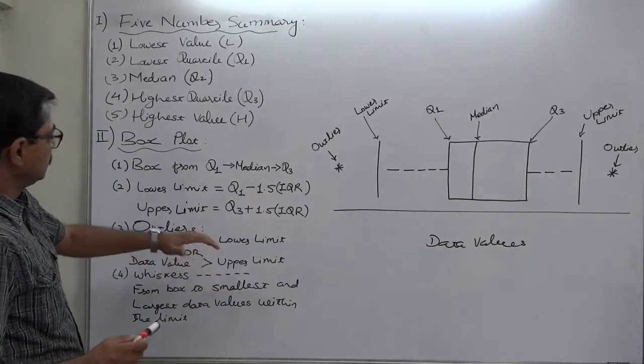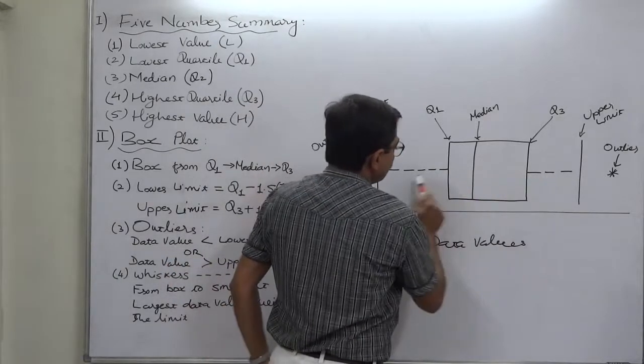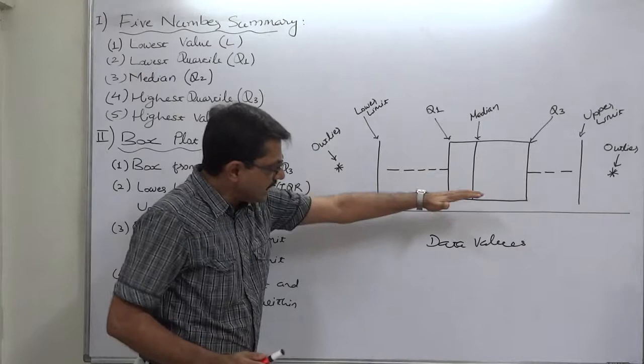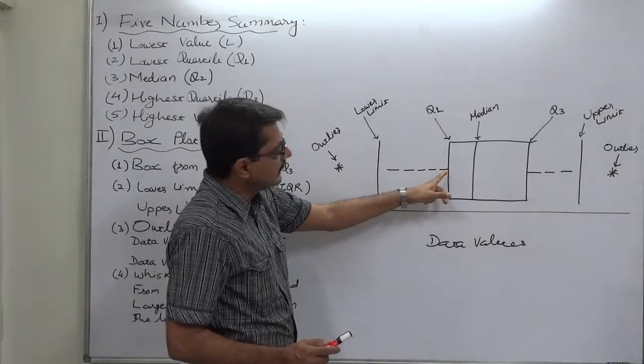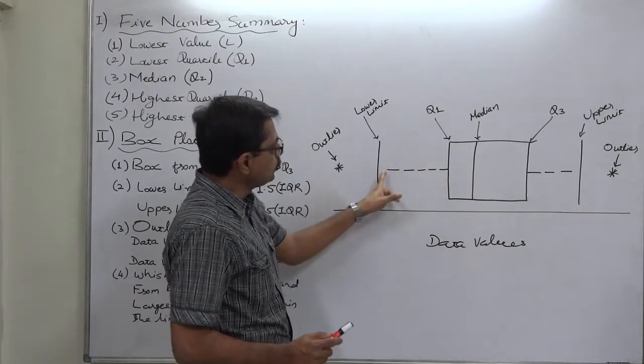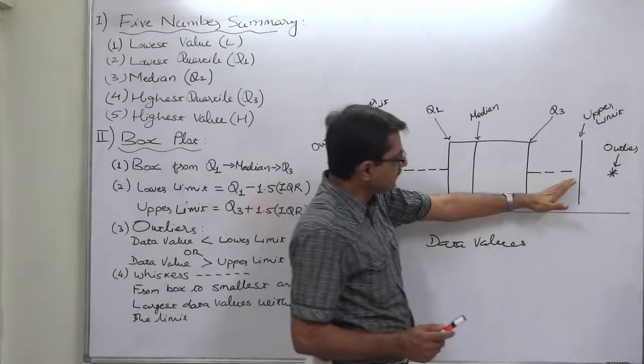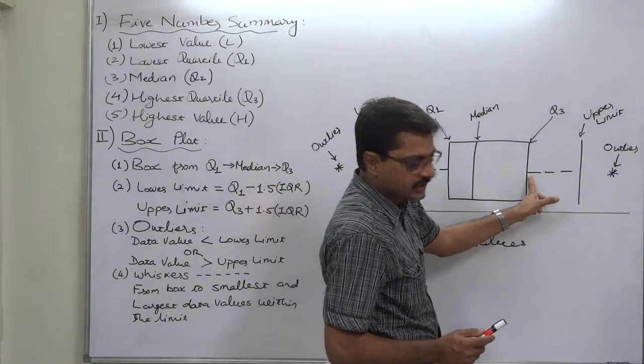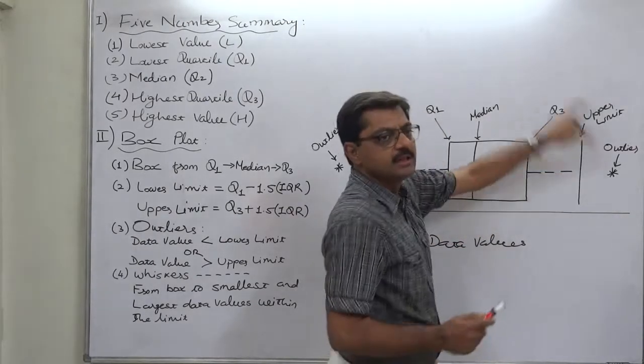Upper limit and lower limit are also marked because we have written the data values on this horizontal axis. Now, the third point is viscers. These dotted lines are known as viscers.